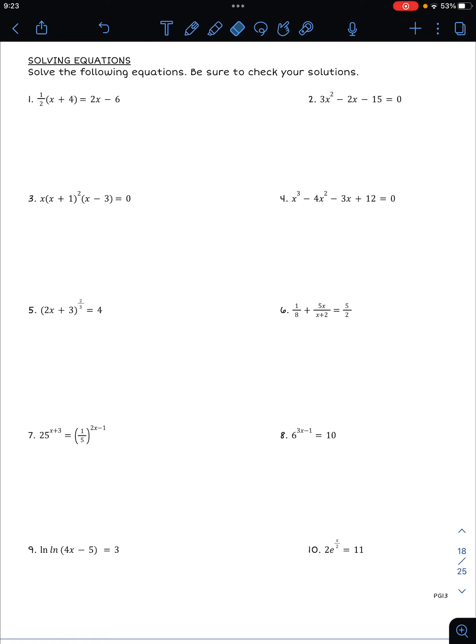Okay, looking at page 13 of the 0.2 packet, we can look at some solving equations. First one's a linear, two linear expressions equation. We could distribute one half in, but actually we could even just multiply both sides of the equation by two. So that's two times a half cancels and multiply this by two. So we get x plus 4 equals 4x minus 12. And then subtracting and adding, we would get 16 equals 3x and x is equal to 16 over 3.